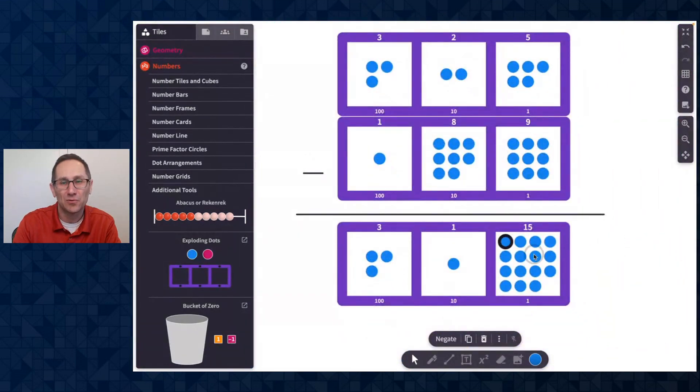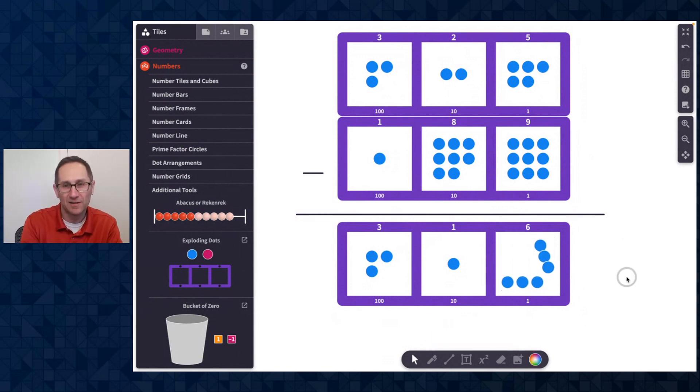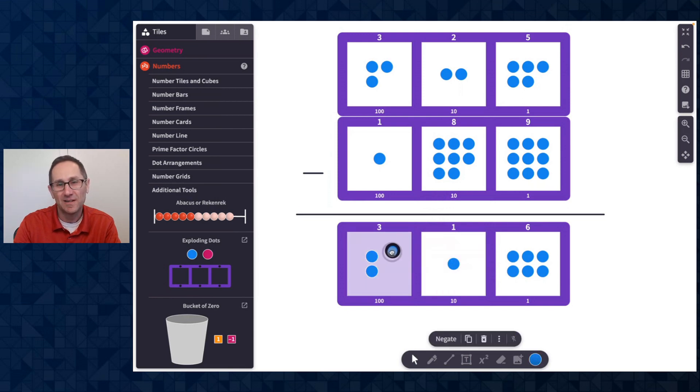And now I need to remove nine of them. I see nine here in this three by three grid. So I clicked and dragged to select them all. I'll hit delete. And now I need to subtract eight, but I only have one here. So I'll do that same action, taking one from the hundreds, putting it into the tens place, and it creates 10 tens.